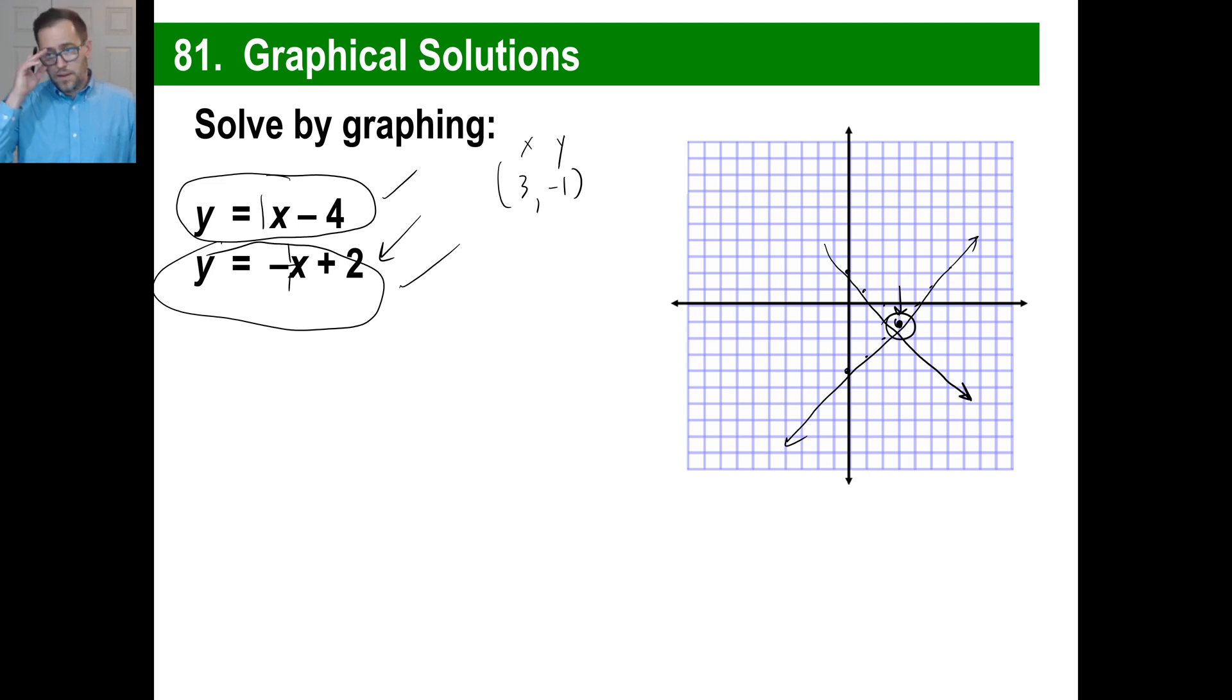So y, negative 1, equals negative 3 plus 2. Well, negative 3 plus 2 is negative 1. So that works as well. By graphing it, you can tell that the point that those two lines intersect, that gives you the answer. That's the whole thing.